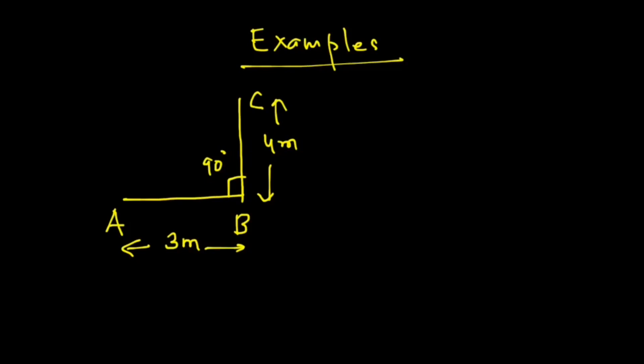Time for some examples. Here we have a path from A to B and then to C. You can also show this by putting arrow marks on this line itself. So somebody is traveling from A and reaching C, and we now need to find out the distance and the displacement.